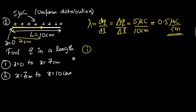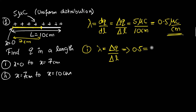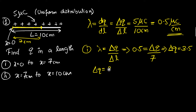Once we know λ, we can easily calculate how much charge is present from 0 to 7 centimeters. Using the same formula: λ = ΔQ / Δl, we substitute 0.5 = ΔQ / 7. Solving, ΔQ = 7 × 0.5 = 3.5 microcoulombs. So the charge in the first 7 centimeters is 3.5 microcoulombs.